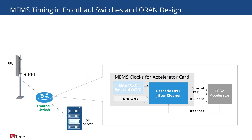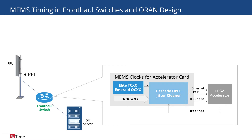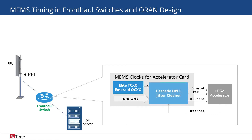For use in the front-haul switch, the Elite TC-XO offers just 1 ppb per degree centigrade frequency over temperature slope, and the Emerald OC-XO has a class-leading 40-part-per-trillion slope. With either the TC-XO or OC-XO acting as the stability engine, Sightime's Cascade Jitter Cleaner offers up to 10 individually configurable outputs with excellent phase jitter and low wander. Cascade can also accept four inputs like enhanced C-PRE, synchronous Ethernet.